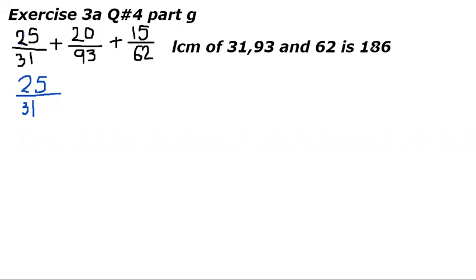Okay as I told you the LCM is 186 so I need to know that 31 how many times equals 186. 31 six times is equal to 186. In the numerator also we have to multiply the numerator with 6 as we are making the denominators equivalent to 186.